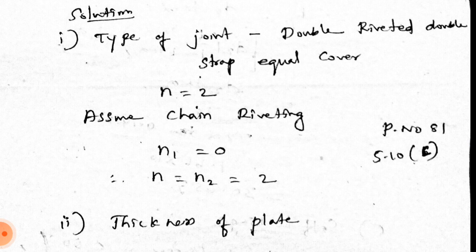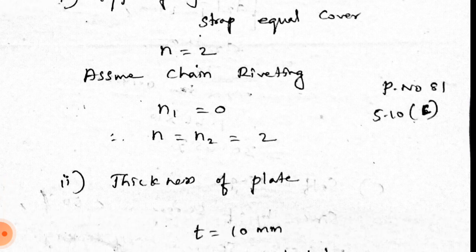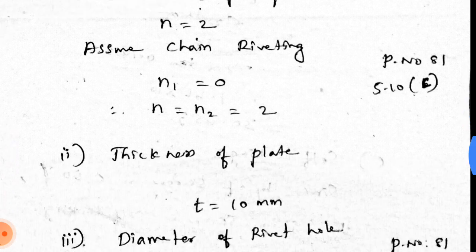n1 = 0, n2 = 2. Refer to page number 81, equation number 5.10. This completes the first step.